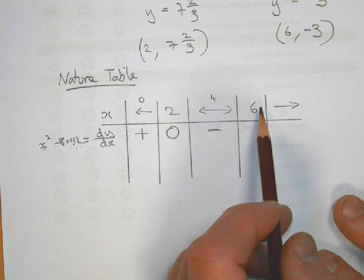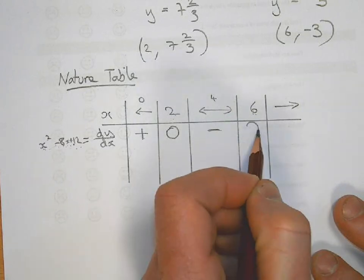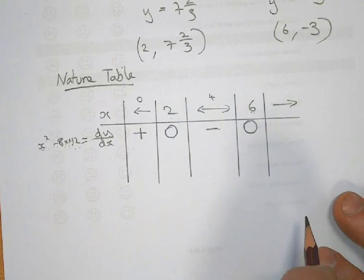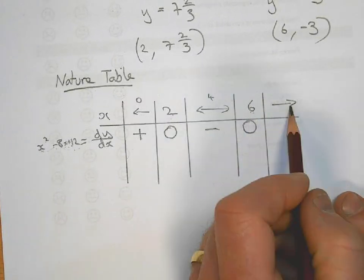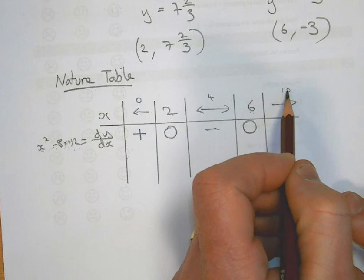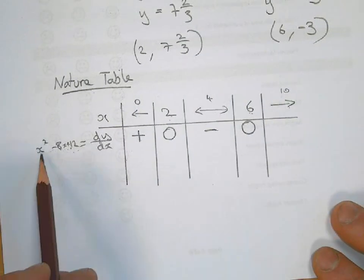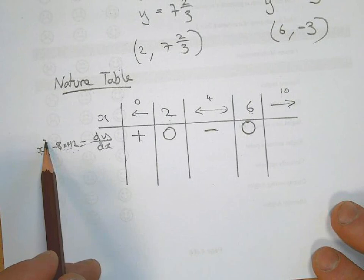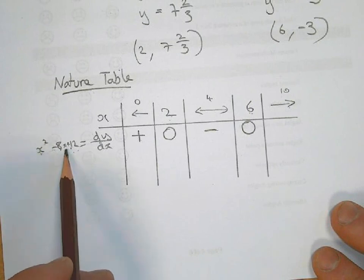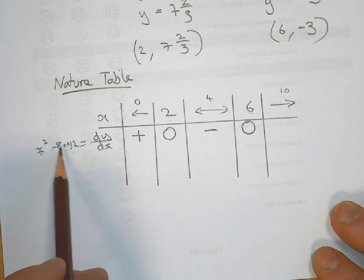At 6, we've got another turning point, so the gradient is 0. And then we pick some number greater than 6. And I'm just going to pick 10 because 10 hopefully is a nice and easy number to use. So again, 10 squared is 100, minus 8 times 10 is 80, which is 20. Add on 12, it's going to give you a positive sign. That's a plus there.